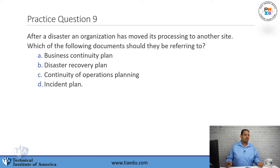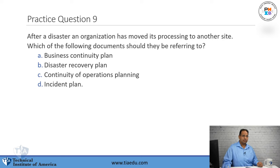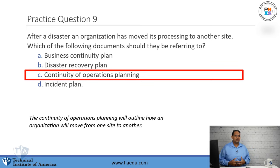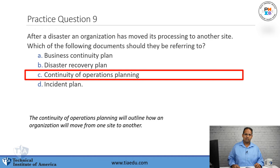Question number nine: After a disaster, an organization moved its processes into another site. Which of the following documents should they be referring to? A, business continuity. B, disaster recovery. C, continuity of operations planning. D, incident plan. The answer is continuity of operations planning, which outlines how companies move between sites, especially during a disaster when one site goes down.